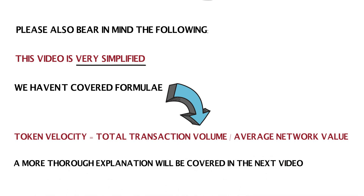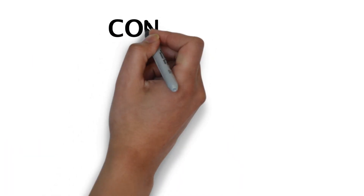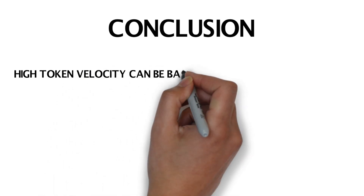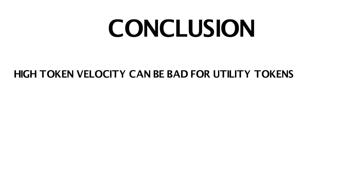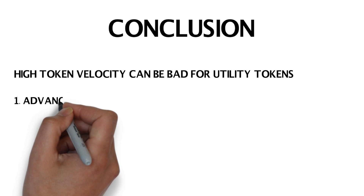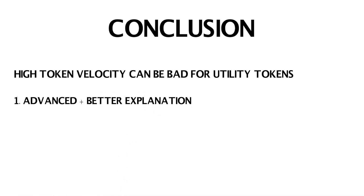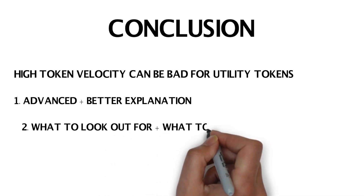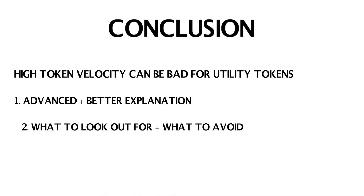In conclusion, token velocity is unbelievably important when evaluating the long-term potential of a cryptocurrency. The next question in your mind is probably: what should we look out for, and what should we avoid? Number one, I'll be creating an advanced explanation of token velocity, including formulas for all of you nerds out there like me. Number two, I'll be creating more videos in the future explaining what you should be looking out for and giving examples of projects which are effectively reducing token velocity and others which aren't.